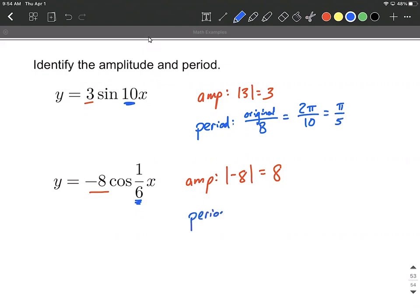Whereas in this other one with our cosine function, again, the original period for cosine is two pi, we're going to divide it by one over six. With doing a little bit of multiplying by the reciprocal, multiplying by six over one, we can say it's going to be 12 pi for the period of this cosine function.